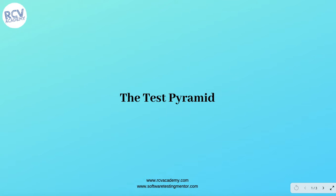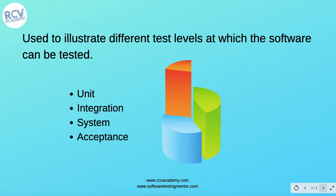In this tutorial we are going to learn about the test pyramid. Your software can be tested at different levels, and this test pyramid is used to illustrate those different test levels. In the ISTQB foundation level syllabus you would have already understood the different test levels, which are unit, integration, system, and acceptance testing.